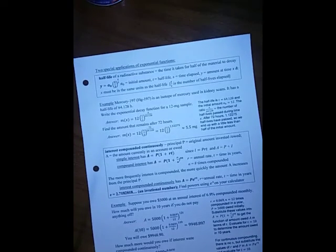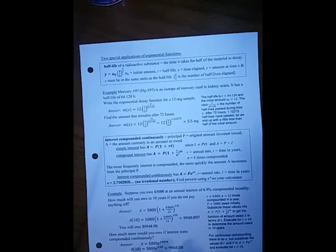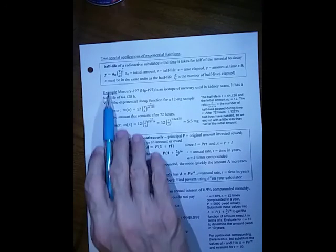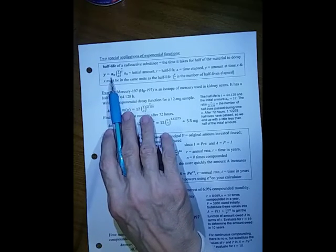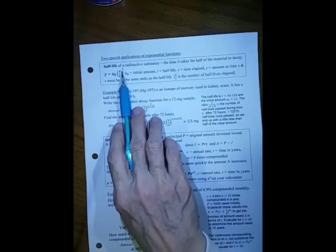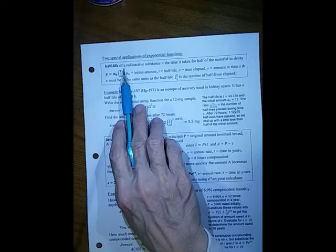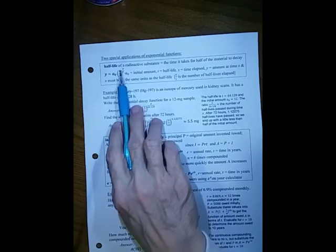Two special applications of exponential functions are half-life and compounding interest. A half-life is the amount of time it takes a radioactive substance to become half. The amount of material keeps getting halved each time, the amount of time it takes to do that is the same for radioactive substances. The function is y equals the initial amount times one-half, and then you need the number of half-lives. x is some general time, and you divide that by the half-life to find how many half-lives have passed.